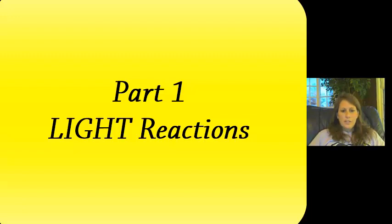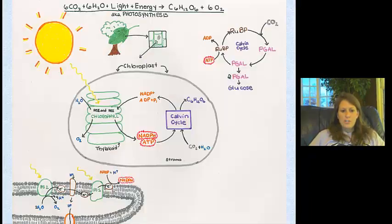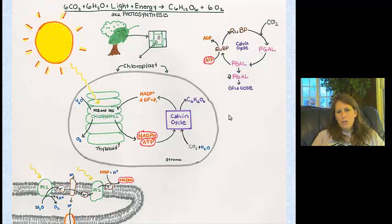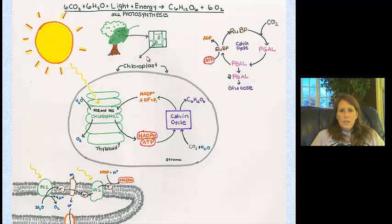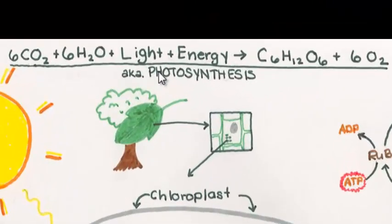Our second lecture of the series is going to deal with light and dark reactions. I'm going to break this down with an actual drawing and we'll do some parts of this in class. We can see the thylakoid membrane where the chlorophyll absorbs the sunlight, which is used for photosynthesis. This whole structure is a chloroplast. We'll talk about the Calvin cycle and what these membranes mean.